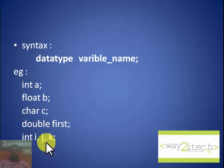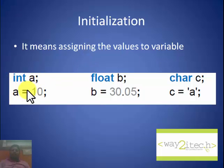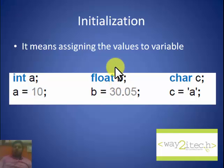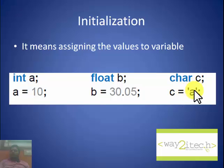Once we have declared the variables — created them and allocated memory — we need to store values in them. Storing a value is known as initialization, which means assigning a value to the variable. For example: int a = 10, float b = 30.05, char c = 'a'. When assigning values to character variables, the values must always be enclosed in single quotes. So variable c stores the character 'a'.